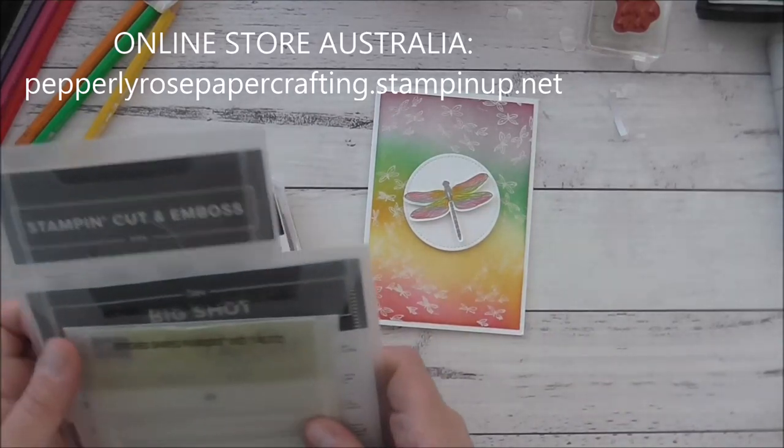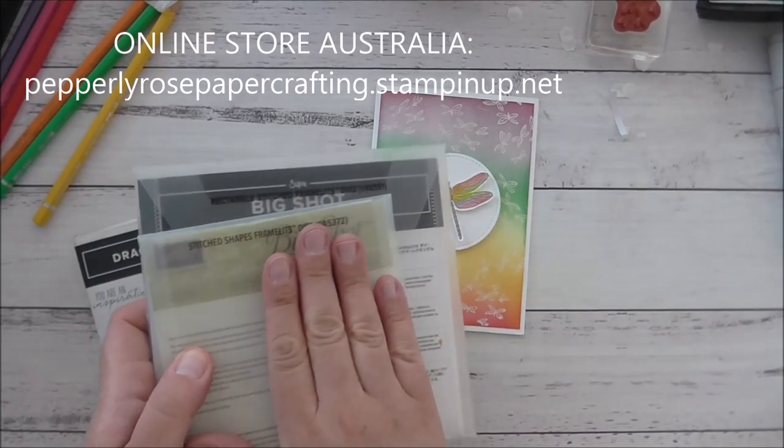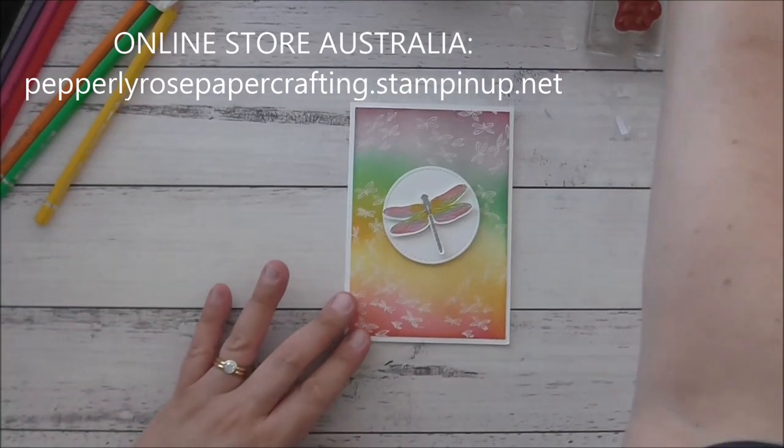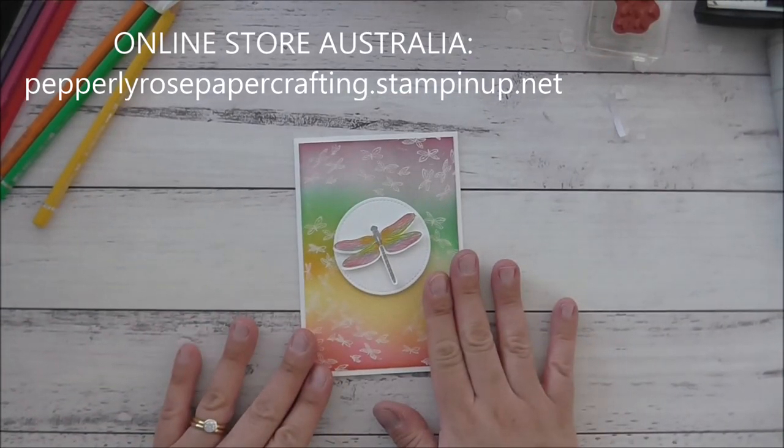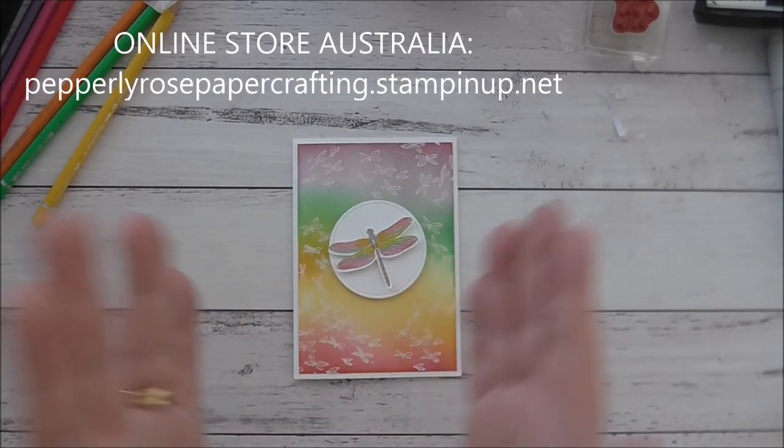So just to recap on the supplies that I used, is the dragonfly garden stamp set, this, and these stitched shapes dies as well. The other two I didn't bother using, but I hope you enjoyed watching today's video.